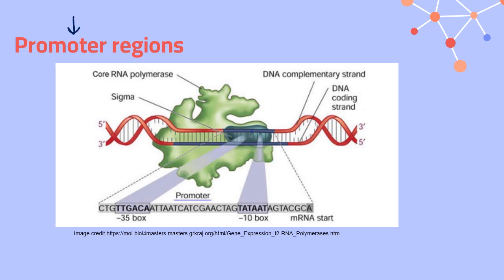In transcription, we're going to start at a promoter region. RNA polymerase — the enzyme that carries out pretty much all of the processes involved in transcription — will bind to our DNA a little bit ahead, or upstream, of the gene that's going to be transcribed, at a promoter region. These promoter regions help attract the RNA polymerase so that transcription can occur on specific genes. They tend to have a lot of thymines and adenines, so sometimes we refer to them as TATA boxes.